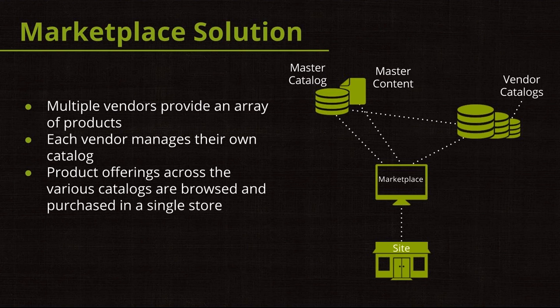For a final layer of complexity, we'll dive into a marketplace solution. Marketplace can mean a lot of different things, but what we're talking about here is having multiple vendors that provide different products, each managing their own catalog with their own section within a website. Product offerings across those various catalogs can be browsed and bought by consumers in a single store, with the ability to deliver through a variety of fulfillment mechanisms. Daniel, let's talk about this — I believe it's the home vertical — marketplace solution.